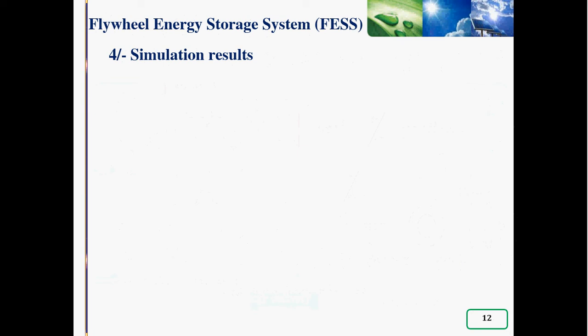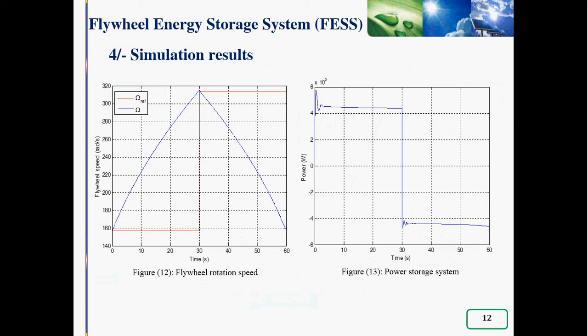With an initial velocity fixed at 157 radian per second. The flywheel rotation speed is shown in figure 12.